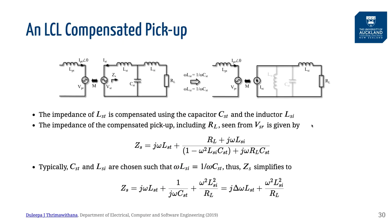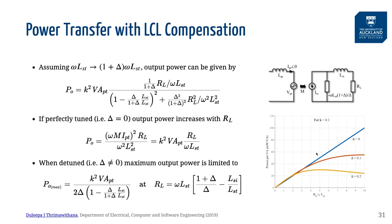LCL compensation networks are also employed in pickups in some designs. The power transfer characteristics of an LCL compensated pickup are somewhat similar to that of a parallel compensated pickup. However, an LCL compensated pickup, like a series compensated pickup, can be perfectly compensated independent of the RL value so that it reflects a real load onto the primary coil. As you can see, in an LCL compensated pickup, the mistuning also impacts the power transfer, and as RL increases beyond a certain point, the power transfer starts coming down.